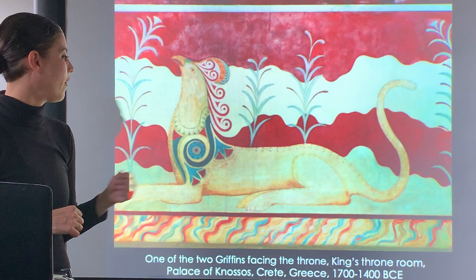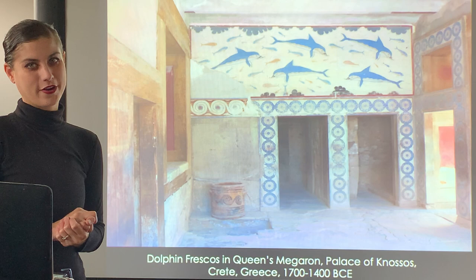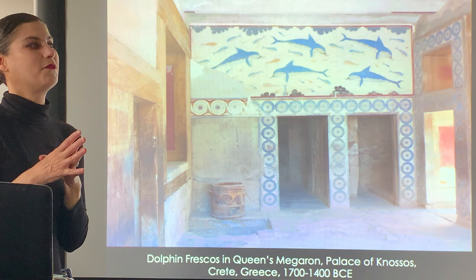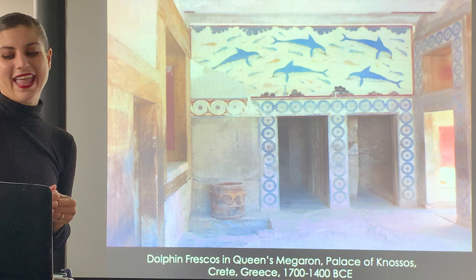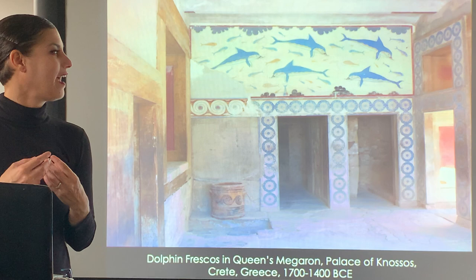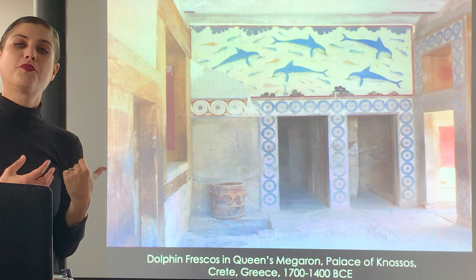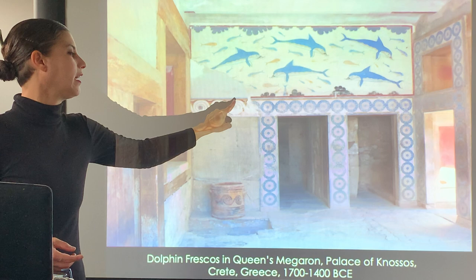In the queen's megaron, a pod of dolphins fresco features dolphins, other fish, and little sea urchins. When you swim in Greece, sea urchins are present - you just don't step on them. In the ancient world, there would have been pods of dolphins in abundance. The wave pattern is very popular in the Greek world - we'll see it on vases as well.